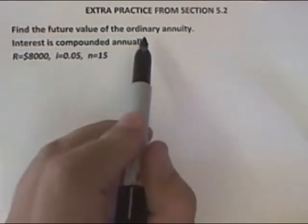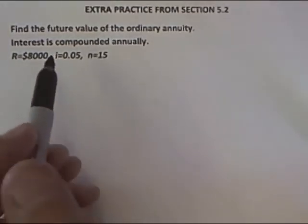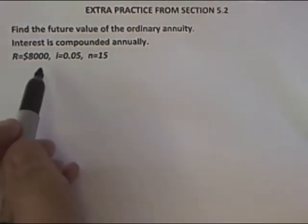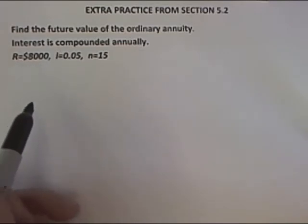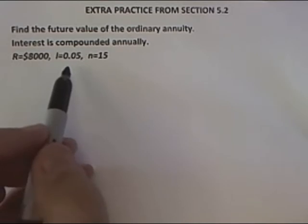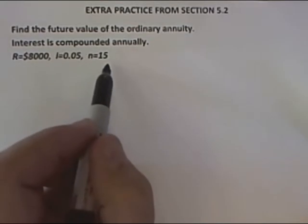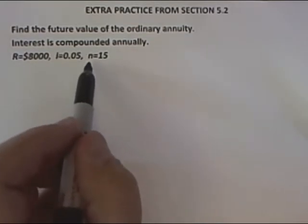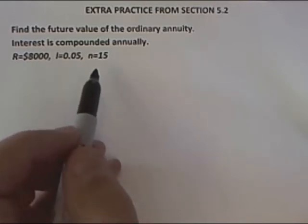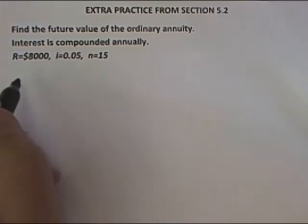Here we want to find the future value of an ordinary annuity. We're told that the interest is compounded annually and that the periodic payment R is $8,000, the interest rate per period i is 0.05, and the total number of compounding periods over the life of the annuity n is 15.